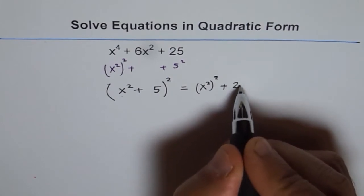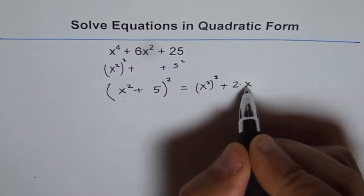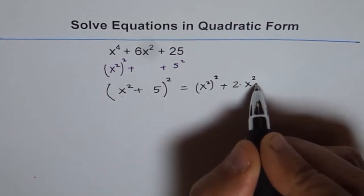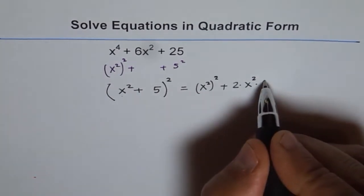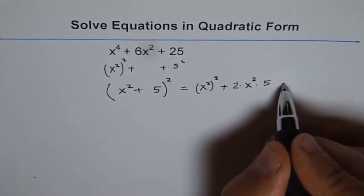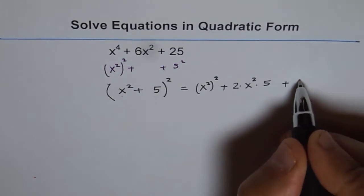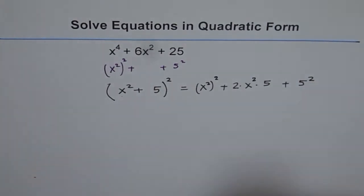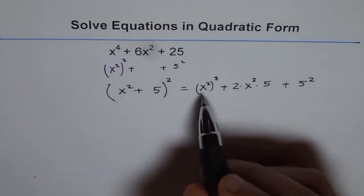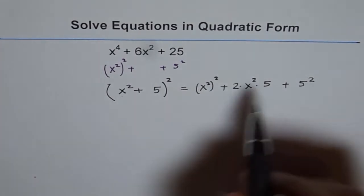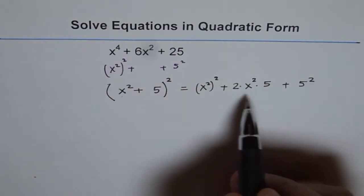Times 5, plus 5^2. Okay. We have the first and the third term in our expression, but we don't have the middle term.